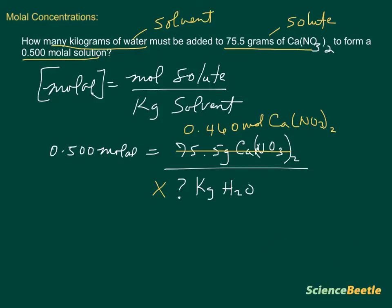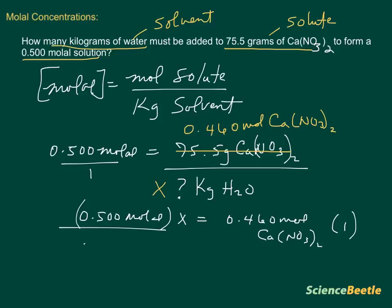Essentially what we've got now is we need to make sure that we can get X by itself. We're going to cross-multiply here because the molal on the other side has a 1. So we're going to take the 0.500 times X. We'll have 0.500 molal times X equals 0.460 moles of Ca(NO3)2 times 1, which essentially is the same thing. And we'll divide by the 0.500 molal on this side. It cancels, and we'll do the same thing to the right-hand side, so 0.500 molal.